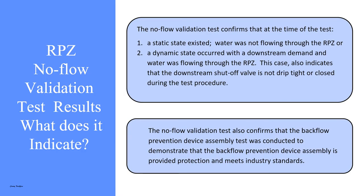RPZ no-flow validation test results. The no-flow validation test confirms that at the time of the test: one, a static state existed and water was not flowing through the RPZ; or two, a dynamic state occurred with a downstream demand and water was flowing through the RPZ. This also indicates that the downstream shutoff valve is not drip tight or was not closed during the test procedure. The no-flow validation test also confirms that the backflow prevention device assembly test was conducted to demonstrate that the assembly is providing protection and meets industry standards.